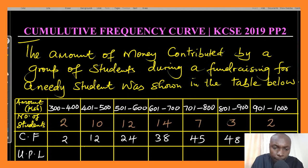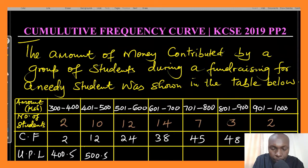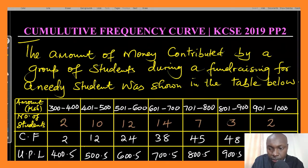Now for the upper class limits: for the class 300 to 400 we have 400.5, then 500.5, then 600.5, then 700.5, then 800.5, then 900.5, and finally 1000.5. Those are the upper class limits of each of those classes.